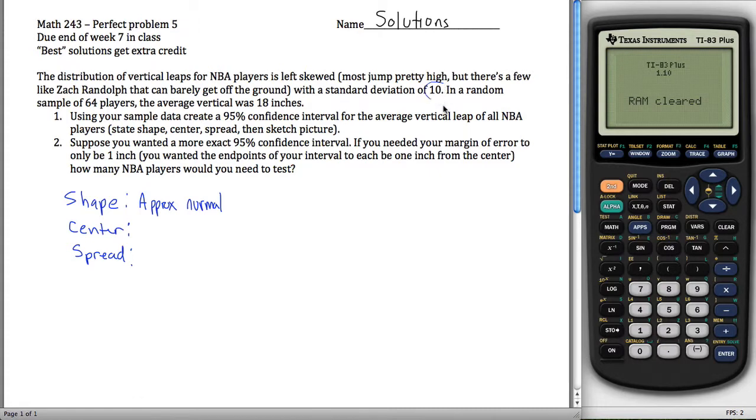The standard deviation of 10, so this value of 10 right here is sigma. In a random sample of 64 players, so this is my value for n. And the average vertical was 18, so I get x̄ was 18.